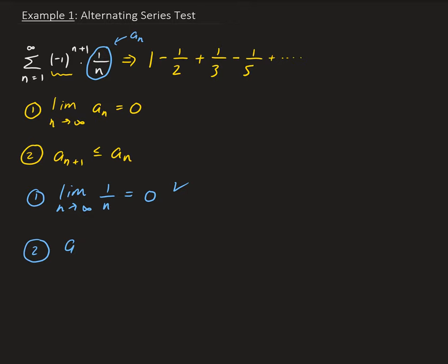Secondly, we need to show that the nth plus 1 term is less than or equal to the nth term. So then from here, we're going to get 1 over n plus 1. So basically just substitute n plus 1 for n. And then we want to see if that's less than or equal to 1 over n. So this can easily be verified.